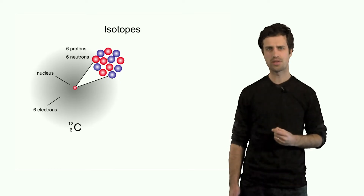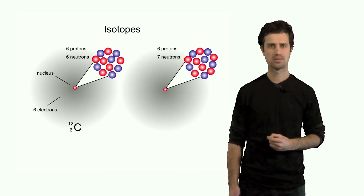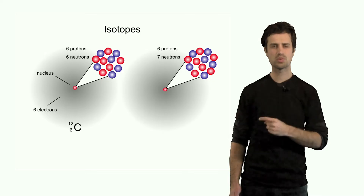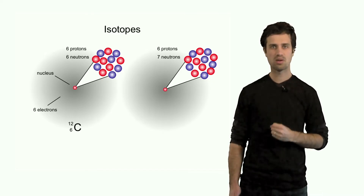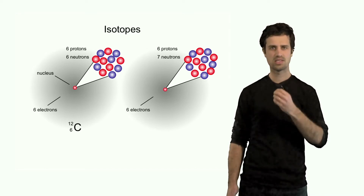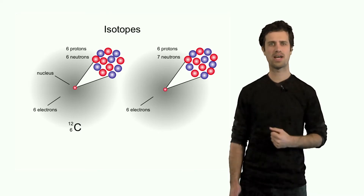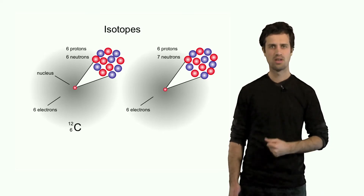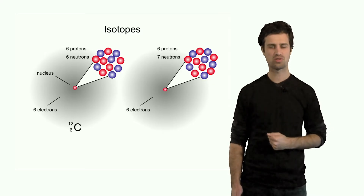Let's look at another carbon atom. This one also has six protons, but instead of having six neutrons like the previous example, this one has seven neutrons. The nucleus is still positively charged by six positive charges, which means it also has six electrons. So both carbon atoms have six protons and six electrons, but the first has six neutrons and the second has seven neutrons.